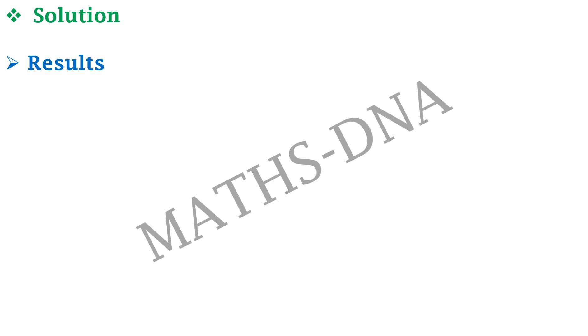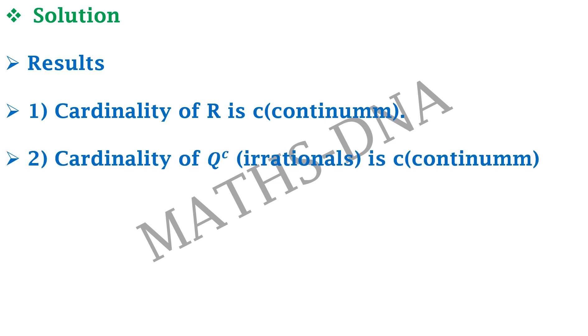To solve this question, we will need some results. The first one, that is, cardinality of R is C, which is continuum. Second, cardinality of irrationals, Q complement, is again, C, which is continuum. And the third one, which is algebra of infinities, that is, C × C, continuum into continuum will be continuum. These three results will be useful to solve the question.